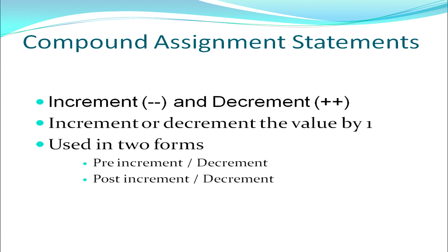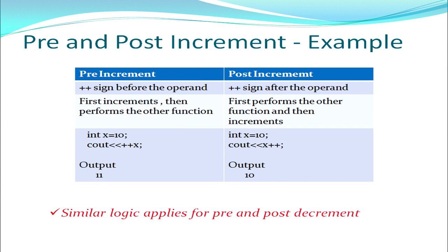We also have increment and decrement operators which increment or decrement the value by 1. If the value is 10, the increment operator increases it to 11, and the decrement operator decreases it to 9. These operators are used in two forms: pre-increment or pre-decrement, and post-increment or post-decrement. In pre-increment, the ++ sign is placed before the operand; in post-increment, ++ is placed after the operand.